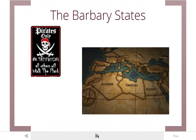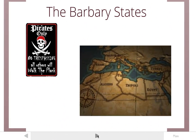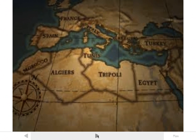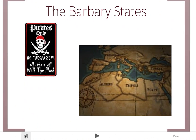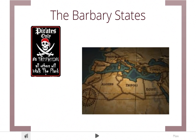First of all is the Barbary States, located in northern Africa in the countries of Morocco, Algiers, Tunis, Tripoli, and Egypt. These states are actually pirate states — the kind of pirates that say 'yo-ho-ho' and steal ships to make money.